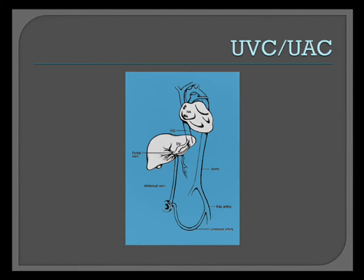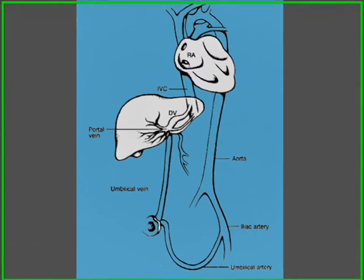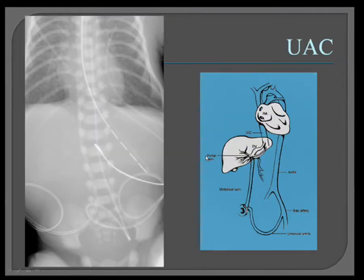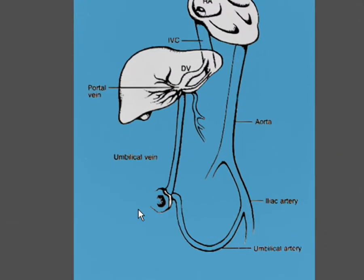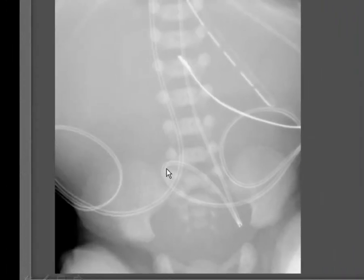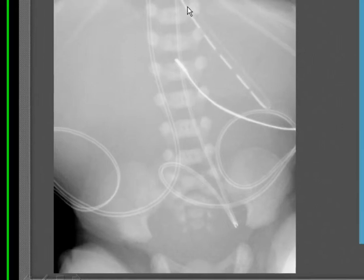First we'll discuss UVCs and UACs. This diagram shows the expected course of the UVC and the UAC. In more detail, the UAC comes down the umbilical artery, takes a characteristic turn up the iliac artery, and terminates in the aorta. In this image we can see that this is the UAC because it takes that characteristic turn and comes up here in the aorta.